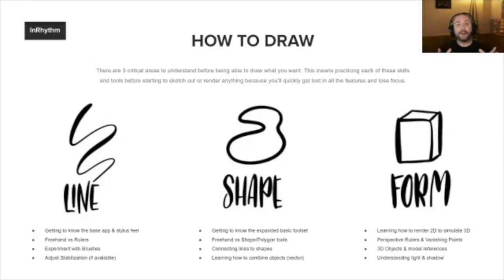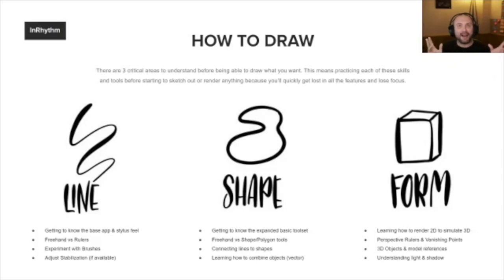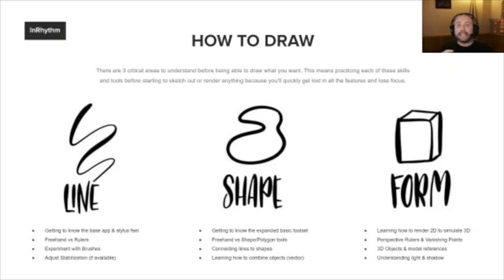Now let's talk about how to draw. I know this seems oversimplified, but these are the things people miss. Everyone starts out saying 'I want to draw a bowl of fruit' or 'a person on a subway bench' or 'a building.' You never hear someone say 'I want to draw a bunch of lines' or 'I want to draw a circle.' The only time you thought about drawing a cube was in middle school when you discovered those three lines make a box.